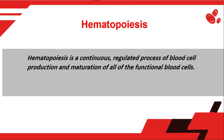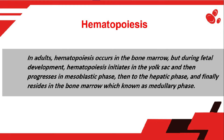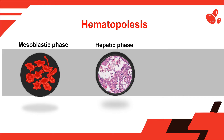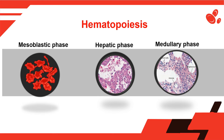Hematopoiesis is a continuous, regulated process of blood cell production and maturation of all functional blood cells. In adults, hematopoiesis occurs in the bone marrow, but during fetal development, hematopoiesis initiates in the yolk sac and then progresses in the mesoblastic phase, then to the hepatic phase, and finally resides in the bone marrow, which is known as the medullary phase.